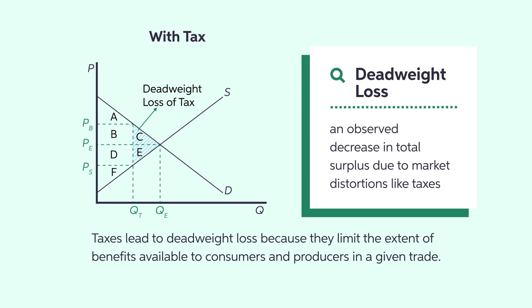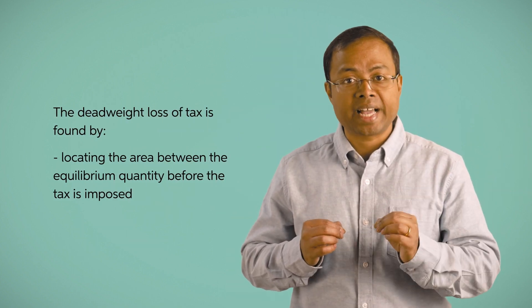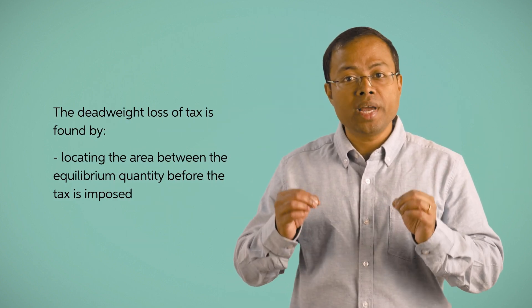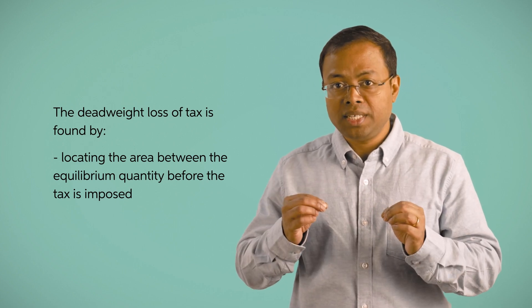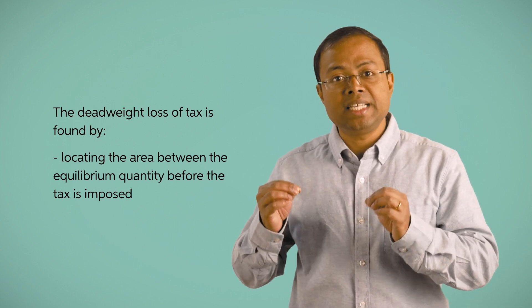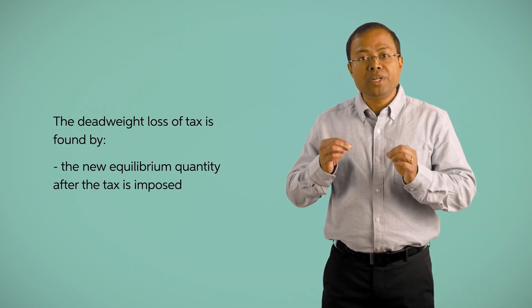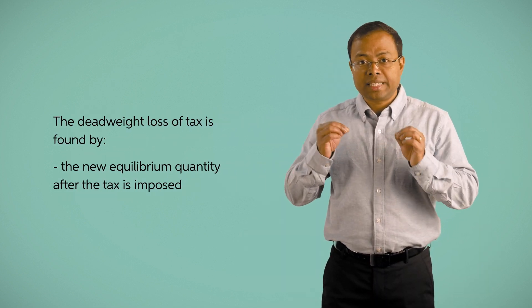Taxes lead to deadweight loss because they limit the extent of benefits available to consumers and producers in a given trade. It's easy to confuse the area that represents the deadweight loss of taxes. Keep in mind that the deadweight loss of tax is found by locating the area between the equilibrium quantity before the tax is imposed and the new equilibrium quantity after the tax is imposed.